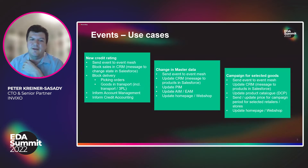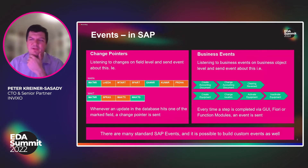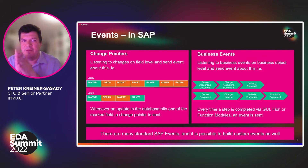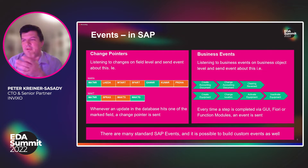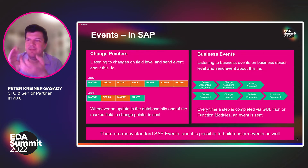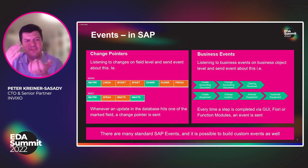In general, there are two types of events in SAP: change pointers and business events. Change pointers are something in SAP where we listen to changes on fields and send an event about this. For instance, if you have a change pointer like Material Master (MATMAS), you have some fields you want to listen to — LARDUS, BRASS, MARC, and other fields. If they are changed, a change pointer occurs and an event will be sent out.